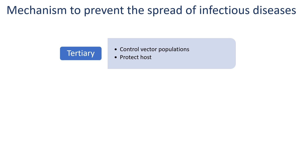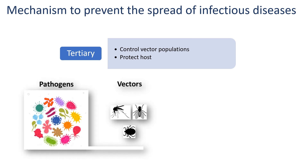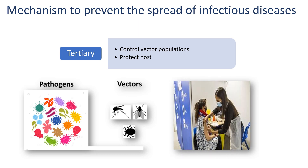The tertiary mechanism is about controlling the population of disease vectors and protecting at-risk individuals. This includes implementing vector control measures such as mosquito nets and the use of insecticides. Additionally, vaccination programs can help protect vulnerable populations from infectious disease by bolstering their immune system.